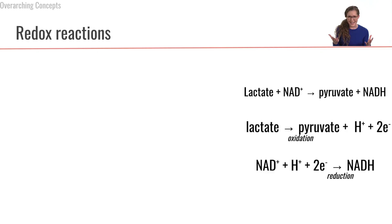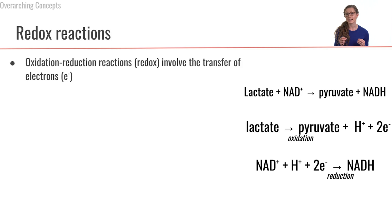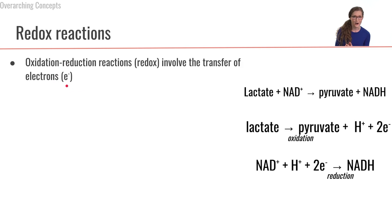Another important foundational concept for metabolism is an understanding of redox reactions — this might bring you back to some high school chemistry classes. Redox is a shortened form for oxidation-reduction reactions, and redox reactions are chemical reactions that involve the transfer of electrons. I'll abbreviate electrons as 'e⁻' because electrons are negatively charged.